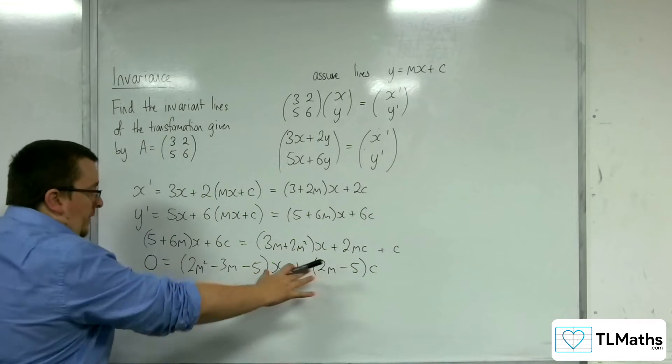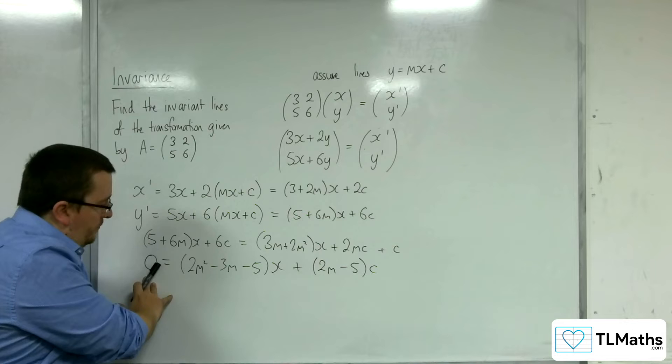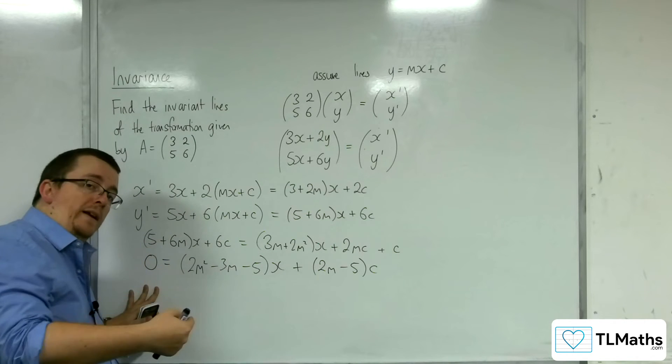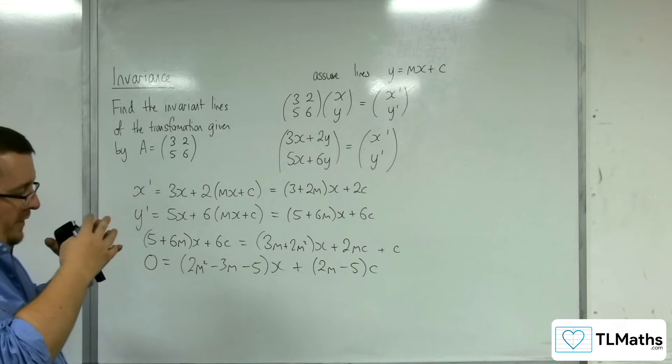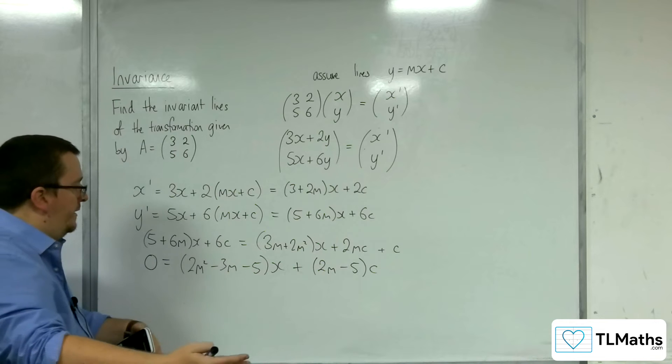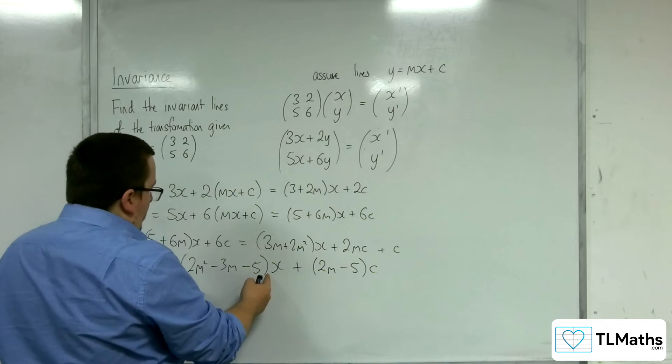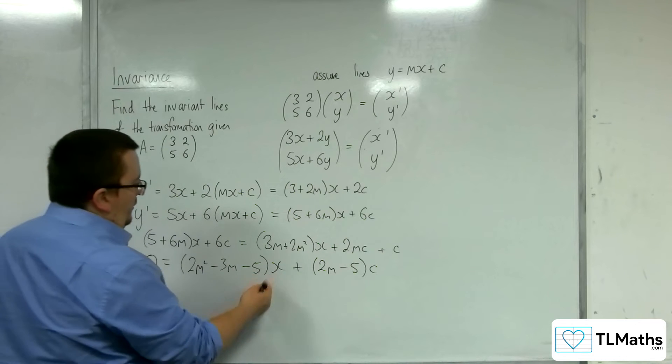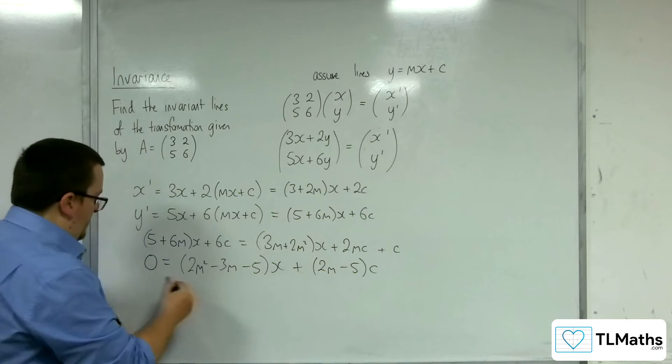So this has got to be equal to 0. So this left-hand side you can kind of think of as 0x plus 0. So the left-hand side has got to be the same as the right-hand side. So whatever's in front of the x here has got to be 0. We need x to vary. So x can't be 0, so the bracket needs to be 0.